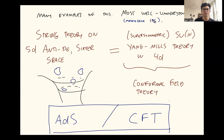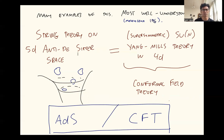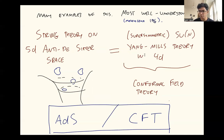When I say quantum gravity on a curved spacetime, the most precisely understood example is string theory on a spacetime which is called anti-de Sitter space in five dimensions. And anti-de Sitter space is just a certain kind of spacetime that is particularly simple to understand from this point of view. It turns out that this quantum gravity theory is exactly the same as something called SU(N) Yang-Mills theory in four dimensions. It also has a property called supersymmetry. There are a lot of words here which you might not know, and in what follows I'm going to try to explain some of these words to you.